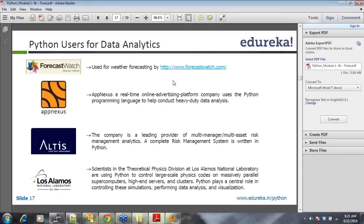Now, moving on to our next slide, Python used for data analytics. Forecast Watch is the use of this for weather forecasting. You can go to forecastwatch.com for further information on data analytics on weather forecasting. You'll also get huge sets of data if you want to write your program. If you want to write your complex program or you want to have huge sets of data, that will also be available here. Or, if you want, you can send us an email. We will provide you not just, we'll give you a link where you'll be able to download gigabytes and gigabytes of data for your analysis. AppNexus is a real-time online advertising platform company, uses the Python programming language to help conduct heavy-duty data analysis. These are examples, Atlas, Los Alamos. So, you see the scientists in the theoretical physical division at Los Alamos National Laboratory, they're using Python to control large-scale physics scores on massive parallel supercomputers, high-end servers and clusters. So, basically Python is used everywhere.